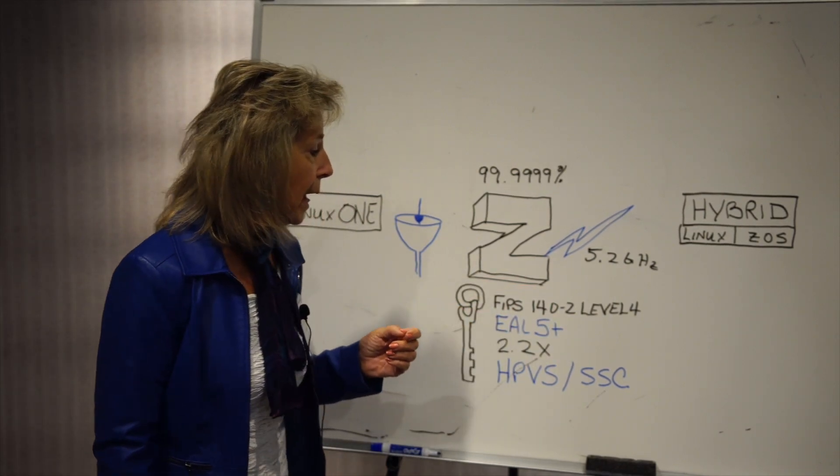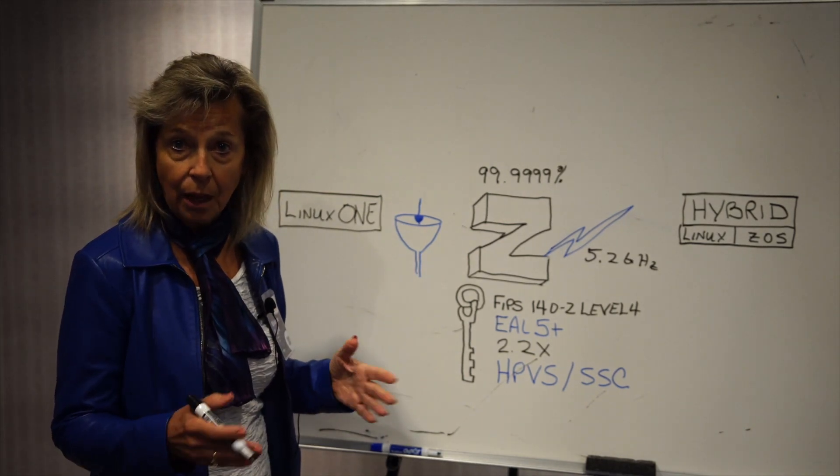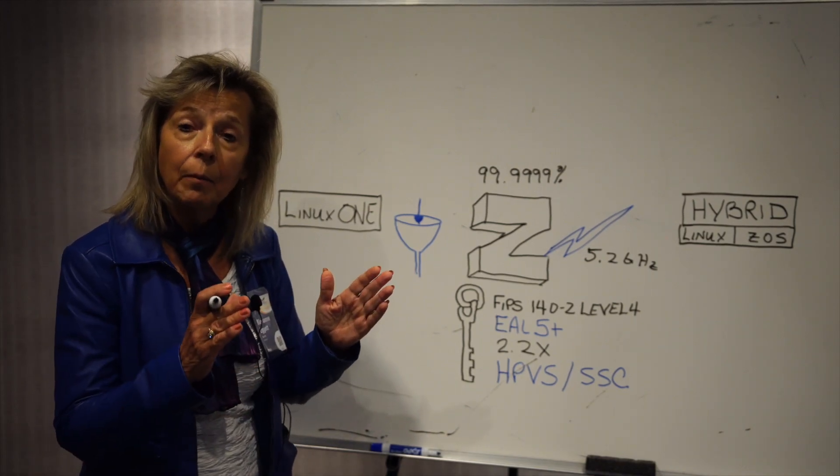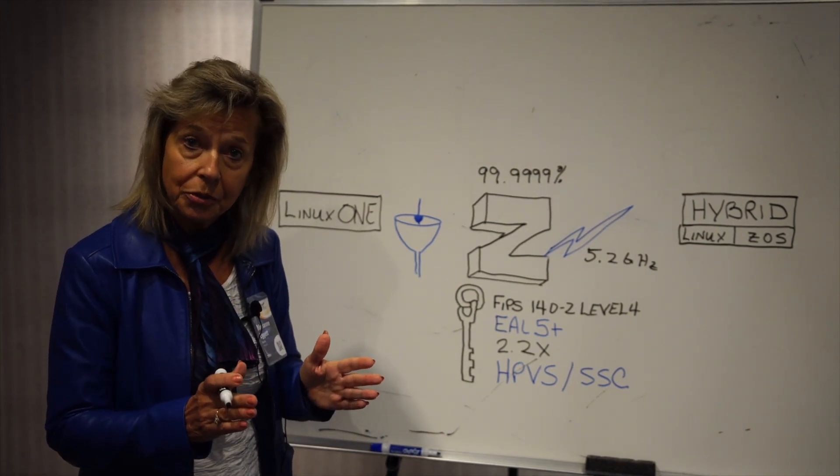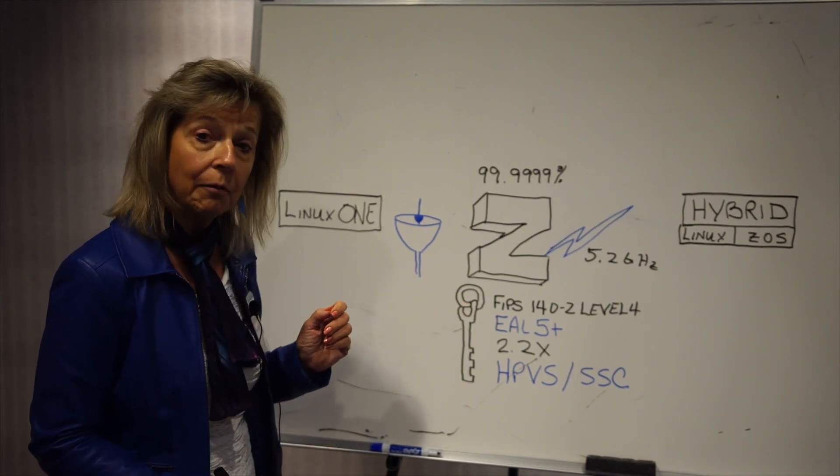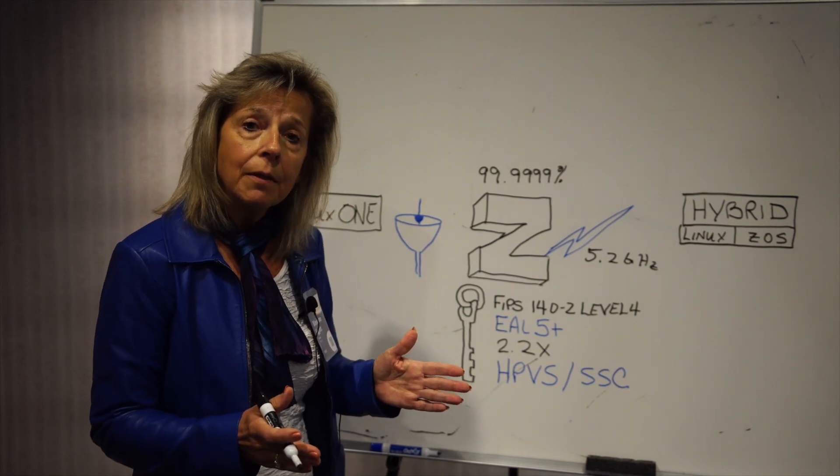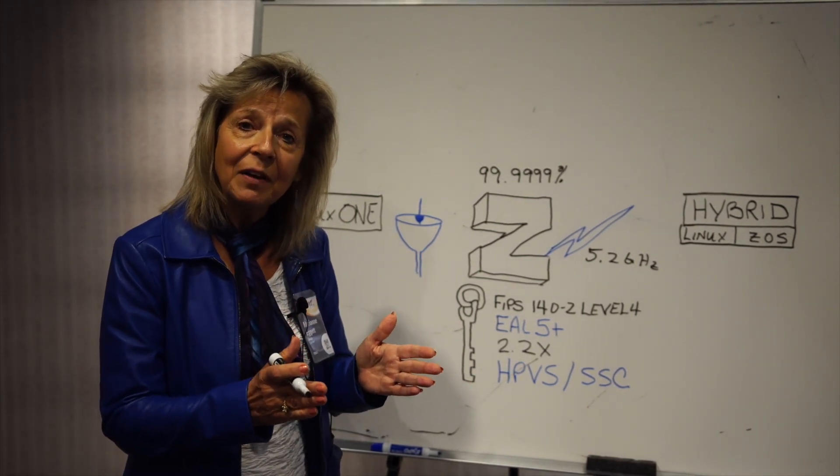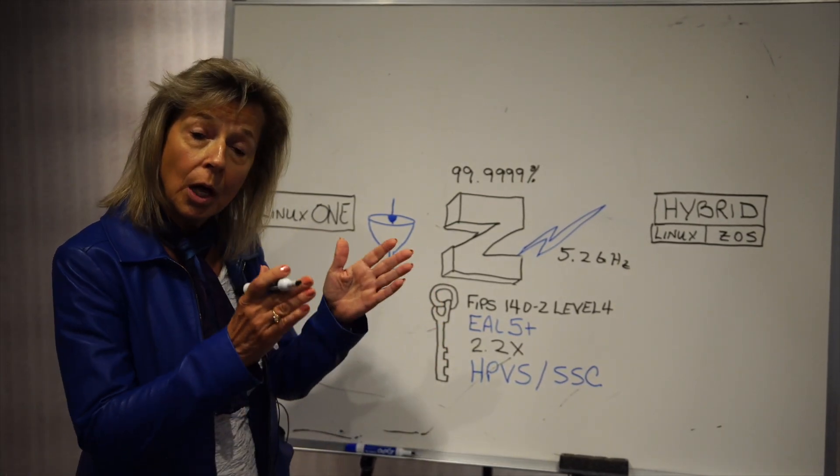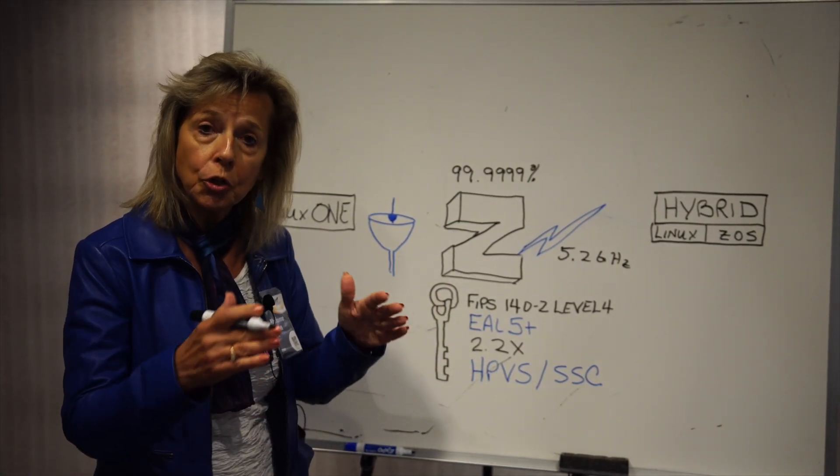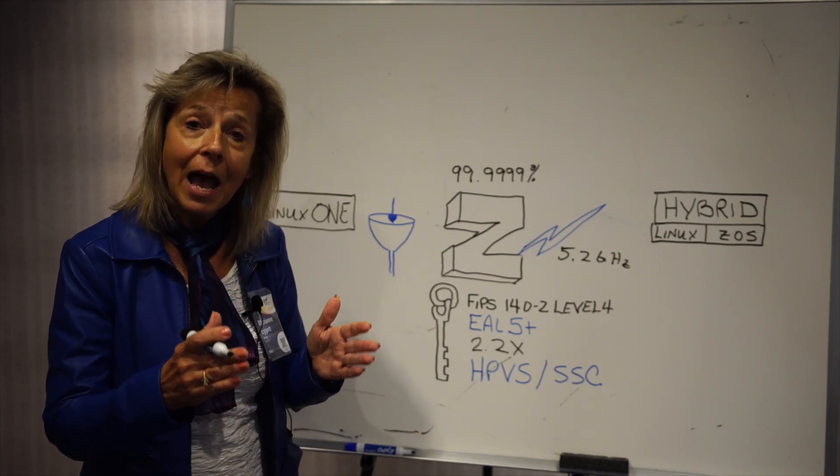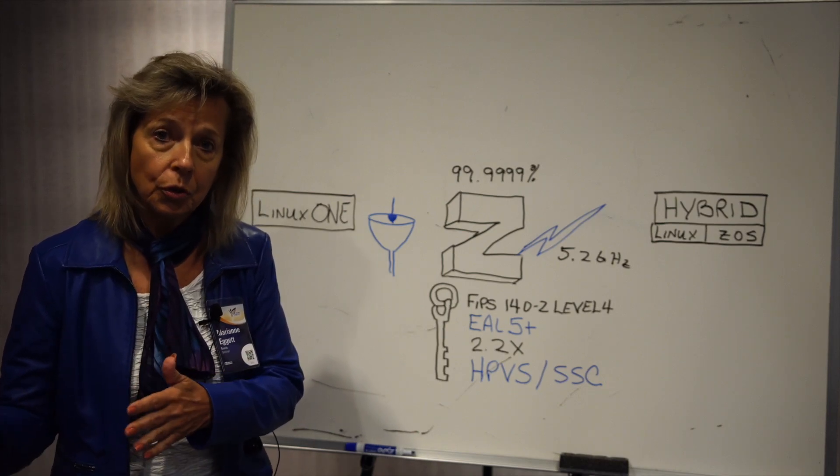Second we're going to talk about EAL 5 plus. Now that's another security certification and that is for our logical partitions. Our logical partitions are this EAL 5 plus. So what does that mean? It means that it is equivalent to having a physically separate server. So our logical partitions are so secure it's as if having separate physical servers.